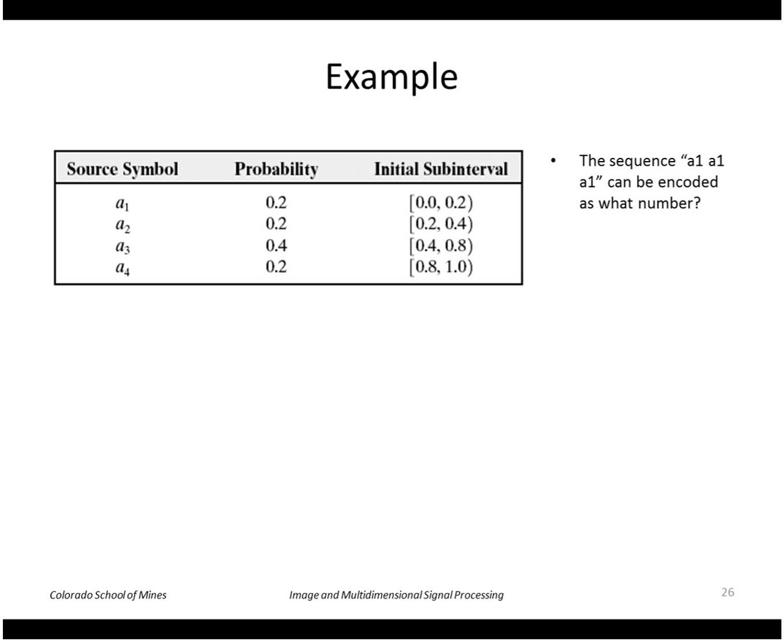Let's do another example. The sequence a1 a1 a1 can be encoded as what number? This is a fairly easy one. Again, we divide up the number line. a1 is the value from 0 to 0.2.